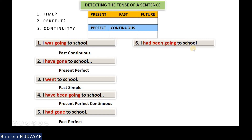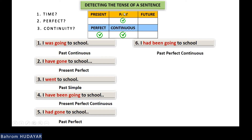Next: 'I had been going to school.' Time — it is past. Perfect — yes, we have perfect characteristics in this sentence. Continuous — yes, we have continuity. The tense of the sentence is past perfect continuous.